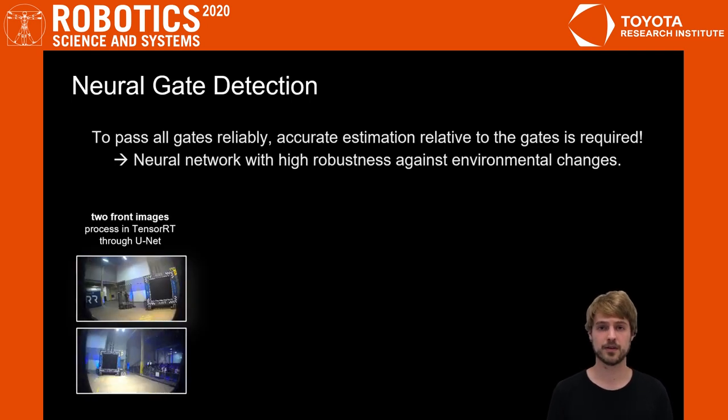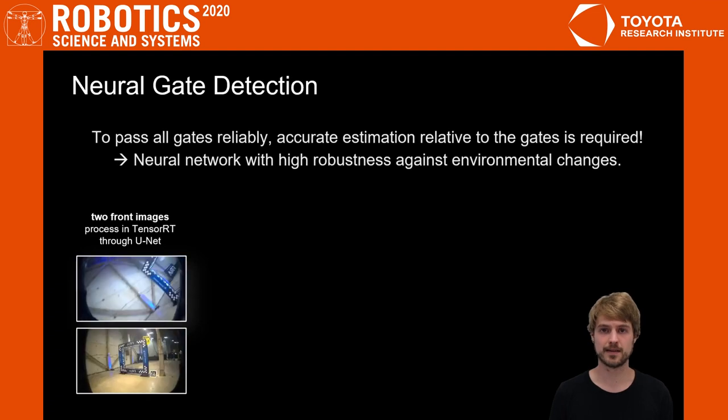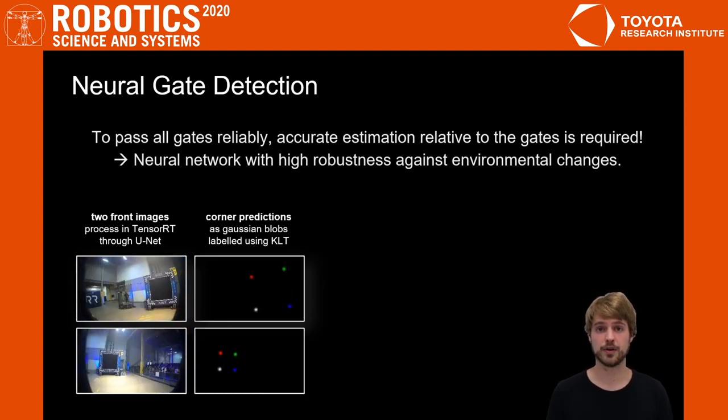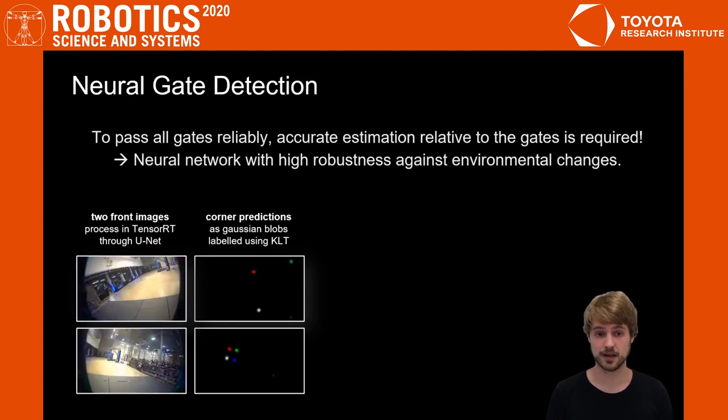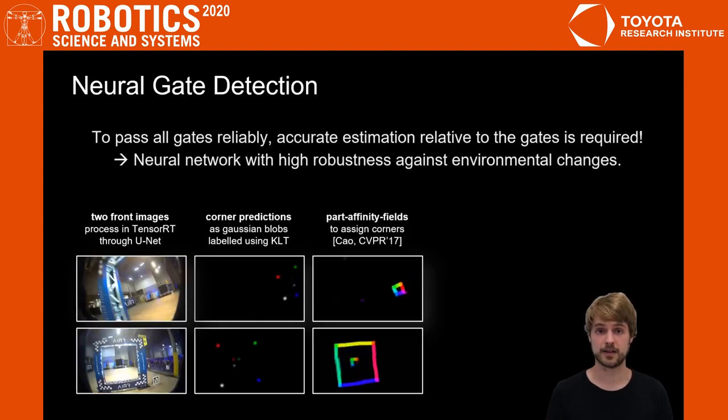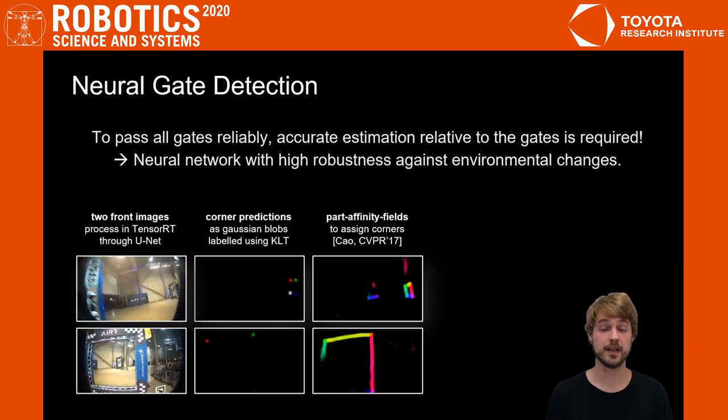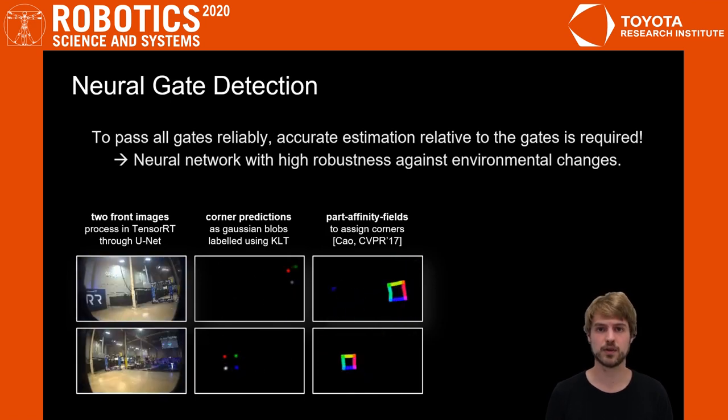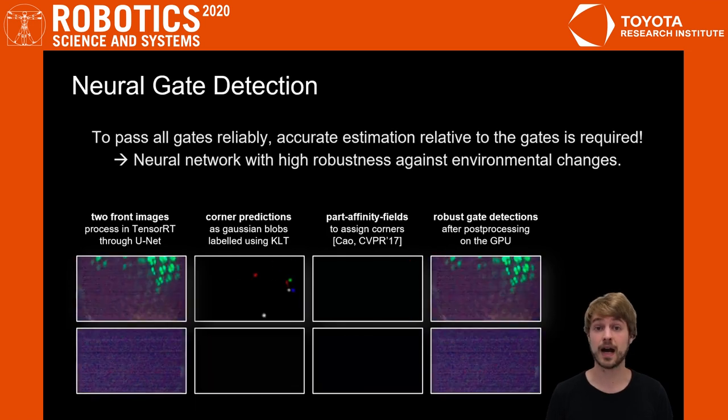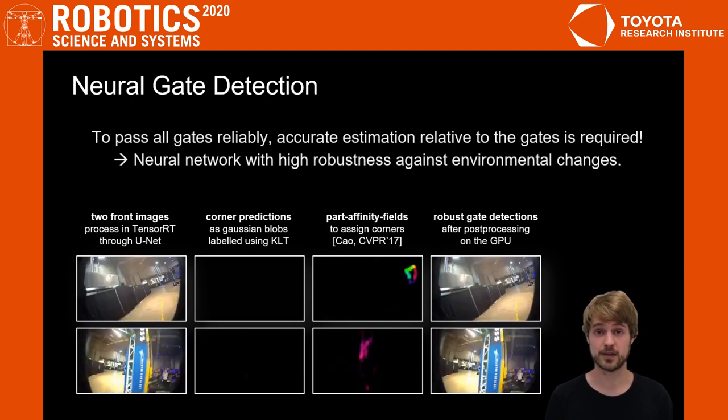We feed the two camera streams through a U-Net architecture accelerated by TensorRT. This provides us with gate corner predictions that we initially labeled using KLT corner tracking. In addition to that, we predict the part affinity field, which allows us to assemble the individual gate corners to full gate detections. These gate detections are highly robust against environmental changes and even difficult lightning conditions.